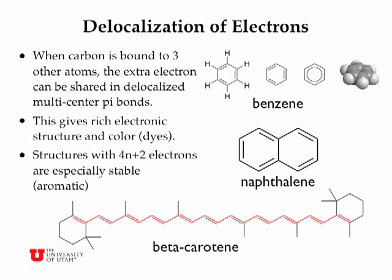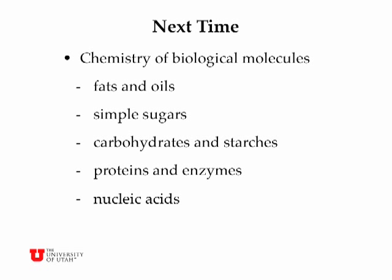Beta-carotene is the molecule that gives carrots their bright orange color. It has a long extended series of alternating carbon-carbon double and single bonds. These bonds are not equivalent — the double bonds are a little bit shorter than the single bonds. This is an example of a dye molecule with rich electronic structure and low-lying electronic states that can absorb photons, giving beta-carotene its orange color. Next time we'll talk about the chemistry of biological molecules as important examples of organic chemistry.